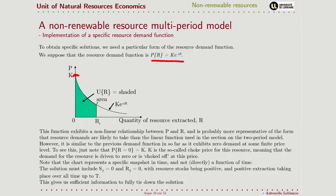Our solution must also consider the fact that we are going to harvest all the resources, so at time capital T the stock must be equal to zero, but also the extraction of the resources must go to zero. With this information on the specific demand function and knowing the terminal conditions and the initial condition, we will have enough information to have a complete solution to our problem.